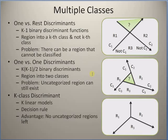The next type is one-versus-one discrimination. In this approach we use k(k−1)/2 binary discriminant functions — that is, the sum 1 plus 2 plus ... plus k, which equals k(k−1)/2. We use this many binary discriminants to classify each sample, comparing each pair of classes.